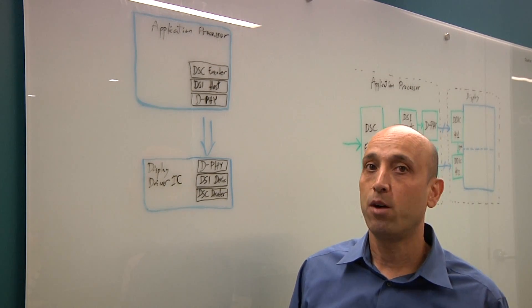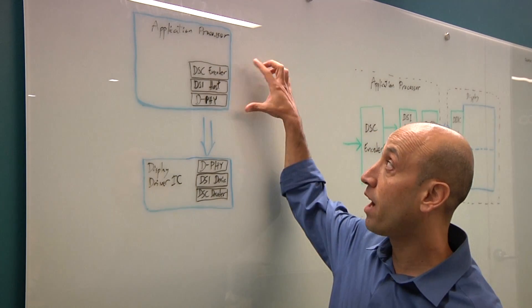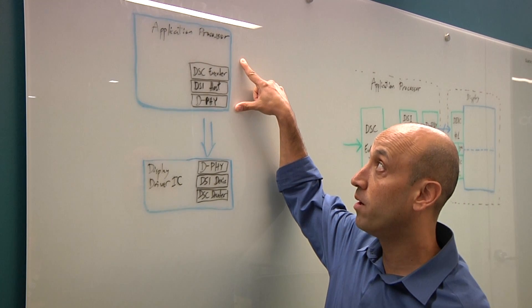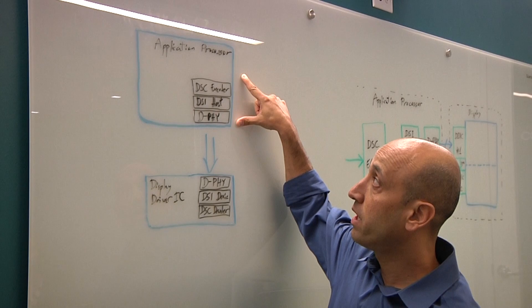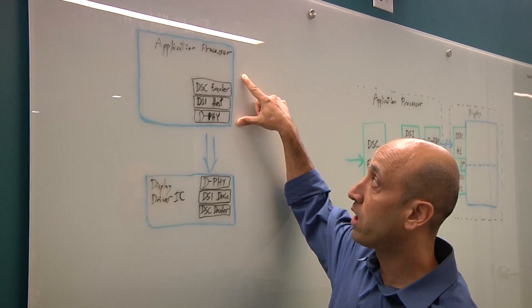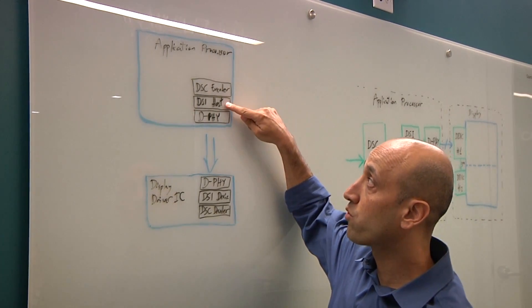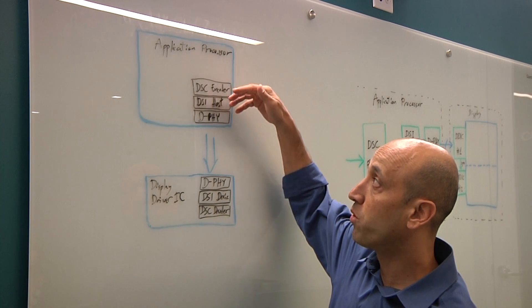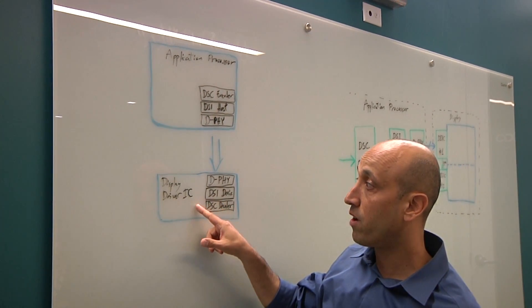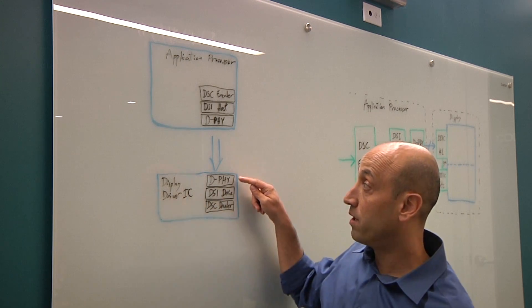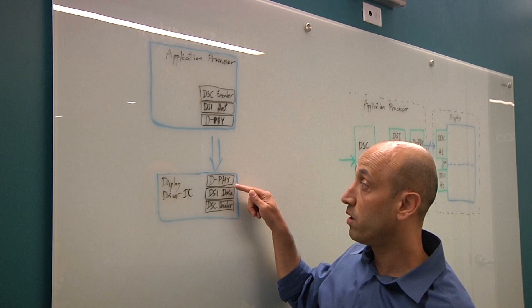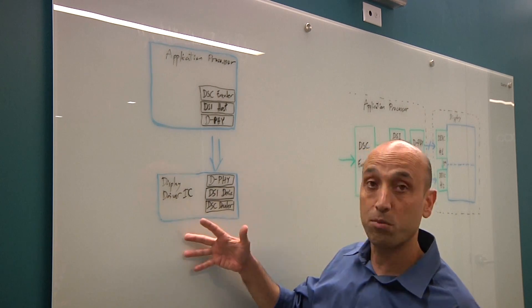So what are we looking at here? We're looking at a typical implementation of a high-end application processor implemented in a smartphone or tablet. The display subsystem typically includes the MIPI DSI host controller and the DeFi, which both transmit the pixels out to the display driver that connects to the display module itself.